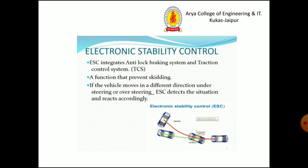Electronically controlled ESC integrates anti-lock braking systems and traction control systems. It is a function that prevents skidding if the vehicle moves in a different direction due to understeering or oversteering; ESC detects the situation and reacts accordingly.